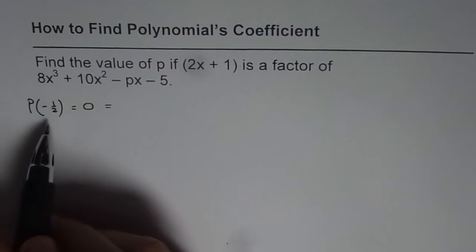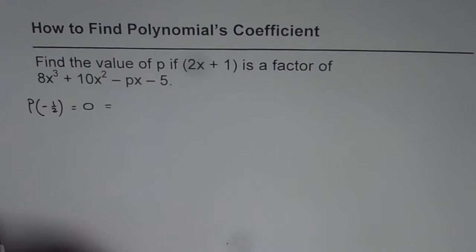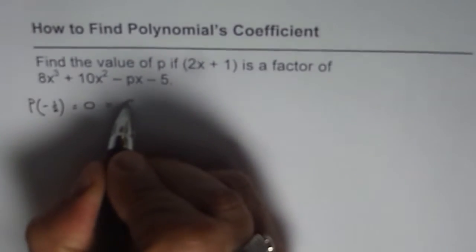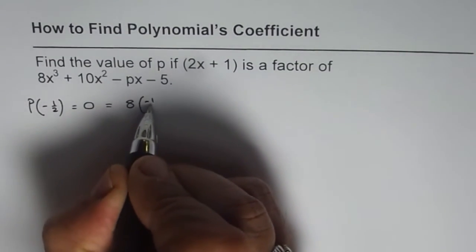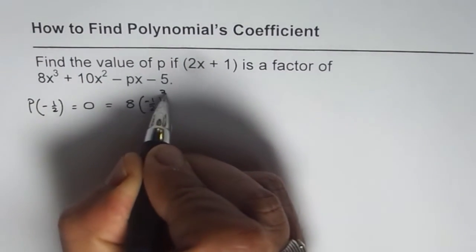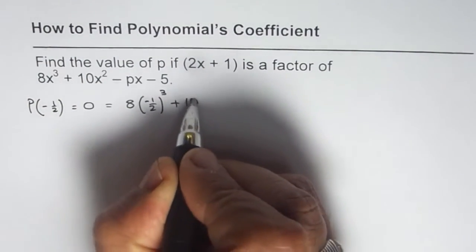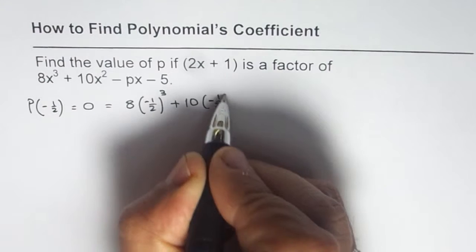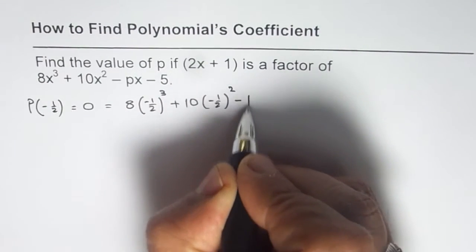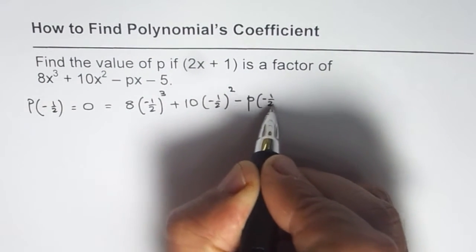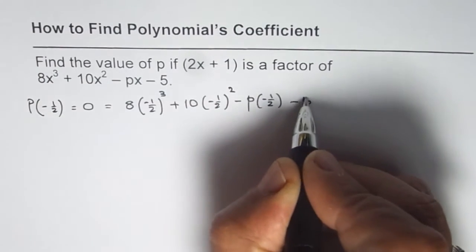So let's substitute x as minus half and then find the value of p. So this is method number 1. When I write x as minus half, I get 8 times minus half cube plus 10 times minus half square minus p times minus half minus 5.